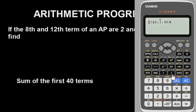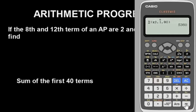Press Enter and you see the result: the answer is 1080. If you were asked to find the sum of the first 80 terms, just replace 40 with 80. If you need the sum of the first 100 terms, just put that value in and you'll see the result. That's how you find the sum of an AP with the Casio calculator.